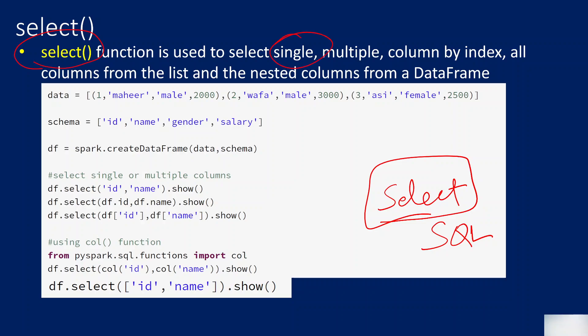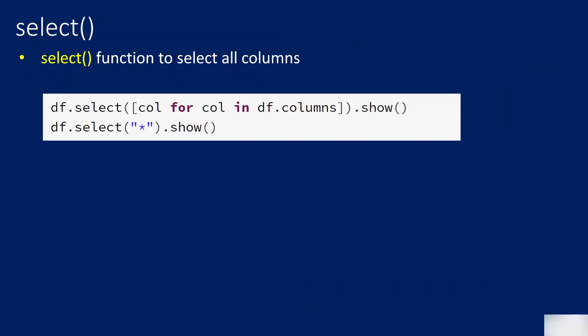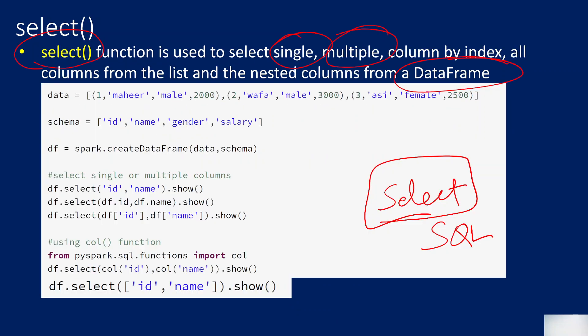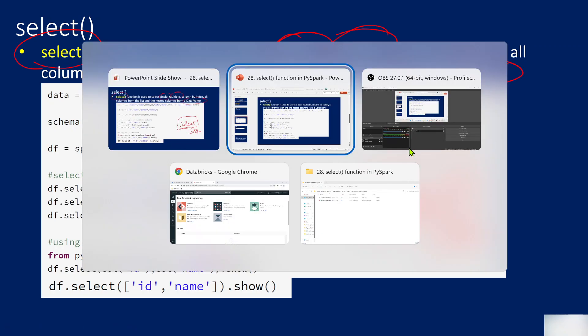Similarly, the select function in PySpark does the same. You can select single or multiple columns using the column index, you can pass a list, or you can select columns from a DataFrame. You can also select all columns. Let me practically show you this with one or two small examples so that you will get the most out of it.